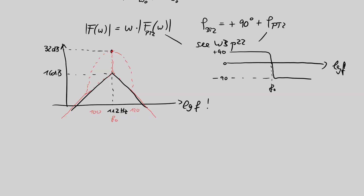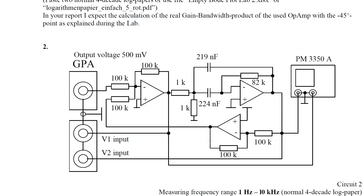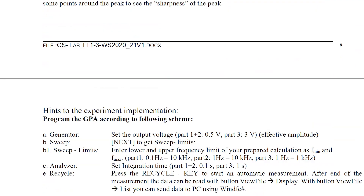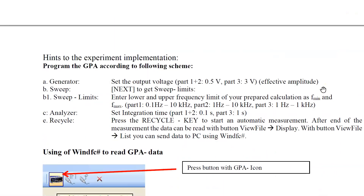Part two of the second experiment is the DT2 circuit. Part three is a digital filter. If you have never worked with digital filters, this is a good introduction to some of their properties. Note that the frequency range for the DT2 is 1 Hz to 10 kHz — four decades. You will need the four-decade Bode plot, also available in Moodle.